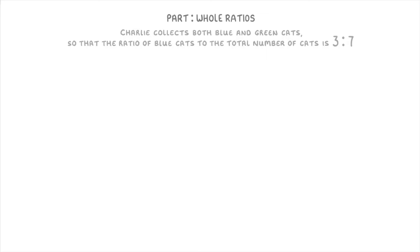For example, in this one here, we're told that Charlie collects both blue and green cats, so that the ratio of blue cats to the total number of cats is three to seven. And the question then is that if she has 12 blue cats, how many green cats must she have? Feel free to pause the video here and have a think.